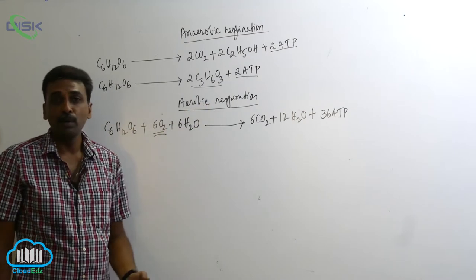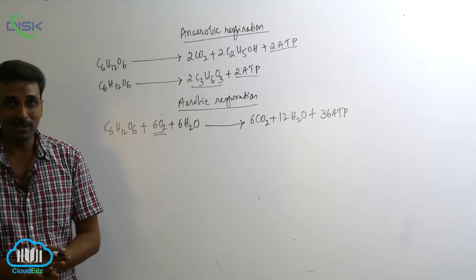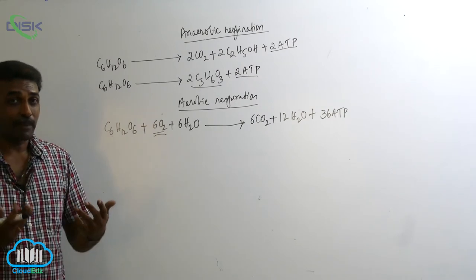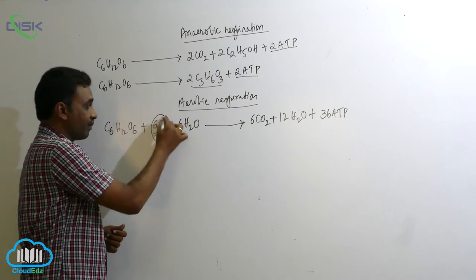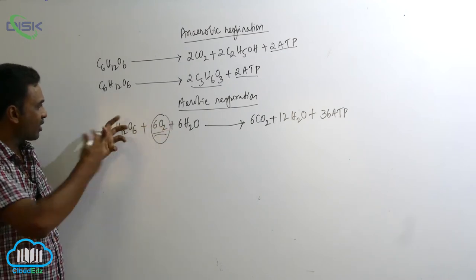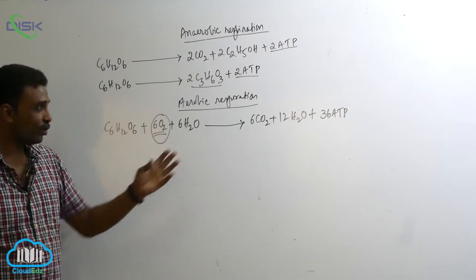But if you see most of the organisms including human beings, most of the plants, most of the animals which are having capacity to utilize oxygen—they utilize oxygen and they oxidize the glucose and it is broken down to produce